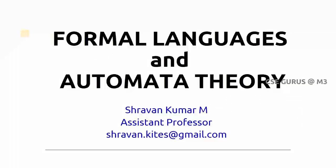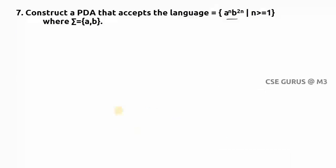Welcome to the class of Formal Language and Automata Theory. Coming to question number 7: construct a pushdown automata that accepts the language a^n b^(2n), where n is greater than or equal to 1. You can observe here it is b^(2n), so how to solve this one.